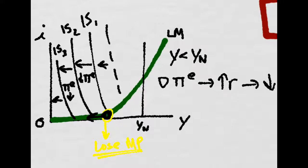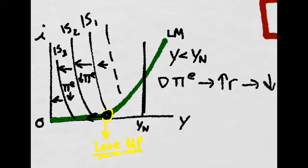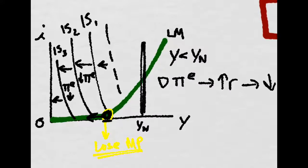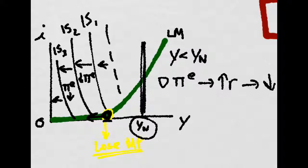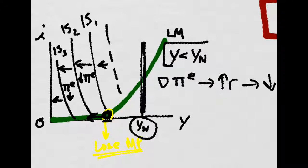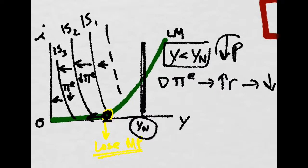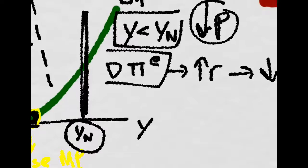But currently we are way down here, far away from our natural rate of output. So we know that if this happens we have the prices go down and that is there are deflationary expectations.